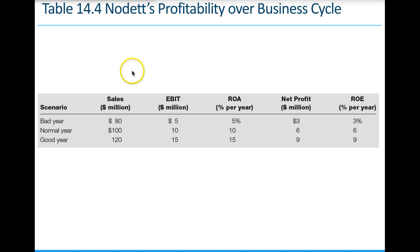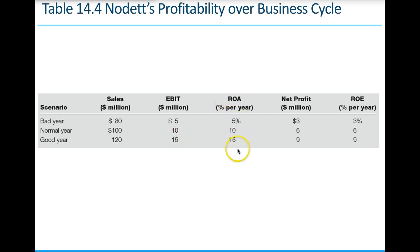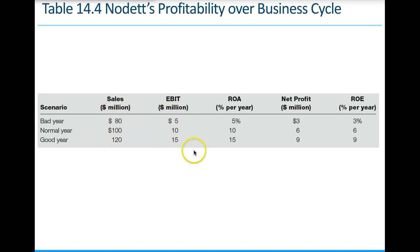Looking at a company's business cycle across a bad year, normal year, and good year, we can see how sales affect operating income (EBIT), return on assets, net profit, and return on equity. In a good year, higher sales lead to higher EBIT, higher return on assets, higher net profit, and higher return on equity. Increasing sales is key, as long as those sales translate into increased earnings.